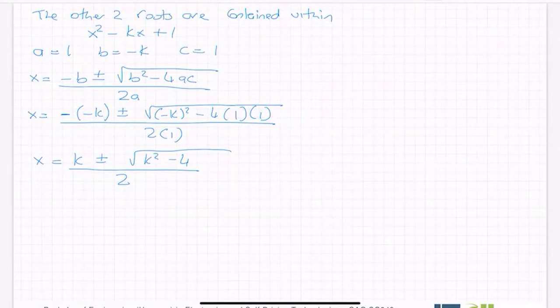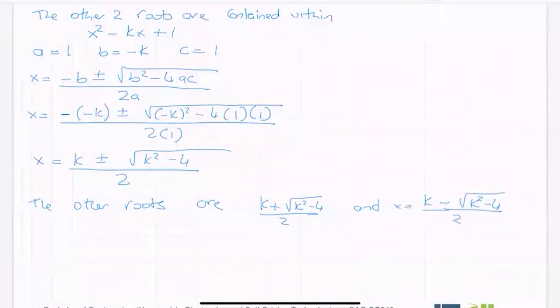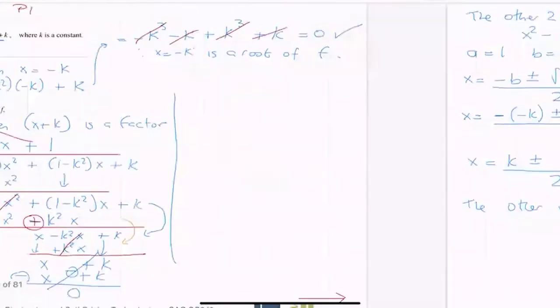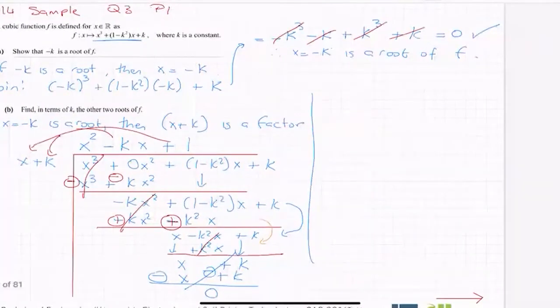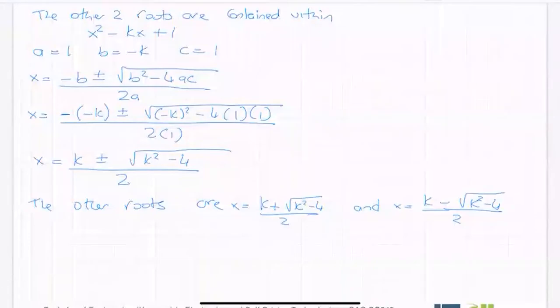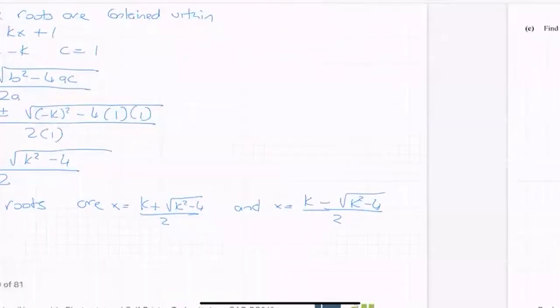You literally keep going just like you would minus k to ought to be squared is k squared minus 4 all over 2a. So you can put x equals before them if you wish. But they are the other two roots of f in terms of k, which means at some stage, I won't be able to go any further. So the other two roots are k plus the square root of k squared minus 4 over 2 and k minus the square root of k squared minus 4 all over 2. And you can put x equals before them if you wish. But they are the other two roots of f in terms of k. So that's how you do that part.